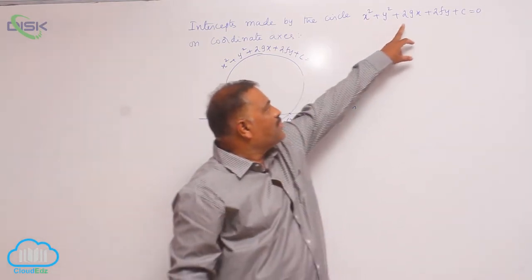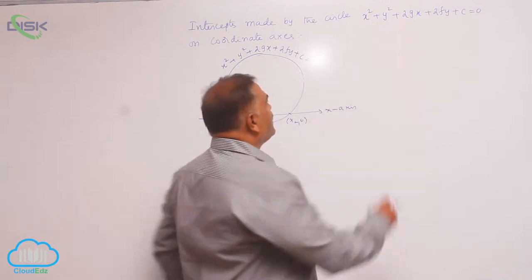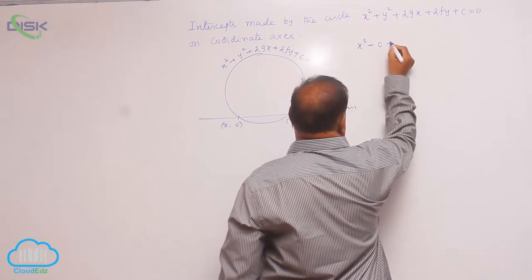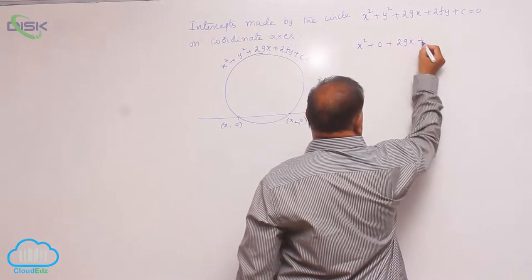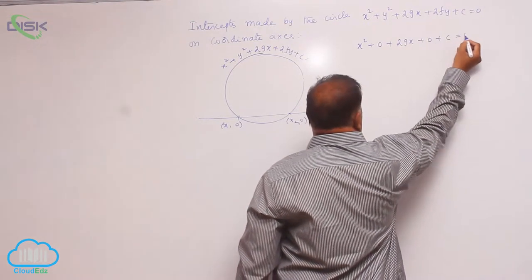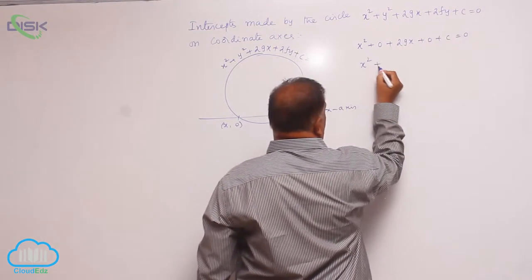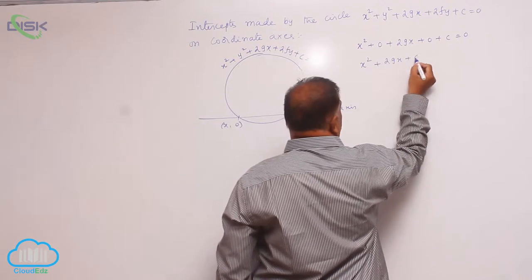Substituting y = 0 into the circle equation, we get x² + 0 + 2gx + 0 + c = 0, which simplifies to x² + 2gx + c = 0.